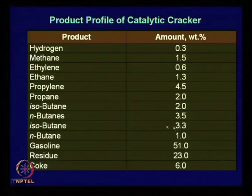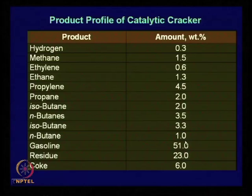From the product profile of a catalytic cracker, propylene yield is about 4.5% — not very high. Other products include gasoline, residue, and coke.